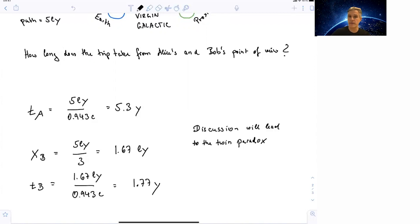For Bob, the length of this path is Lorentz contracted, 5 light years divided by 3, which is the gamma factor, which results to 1.67 light years.